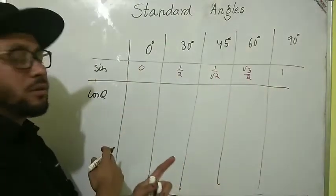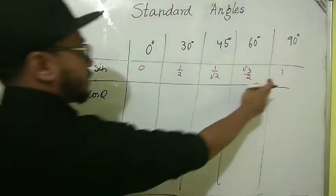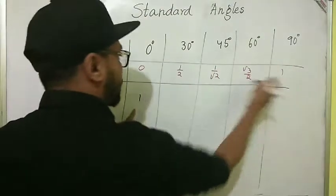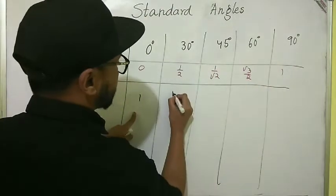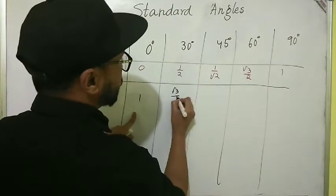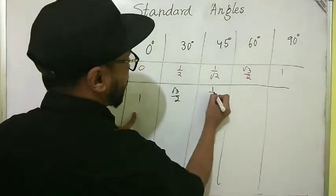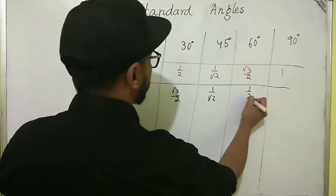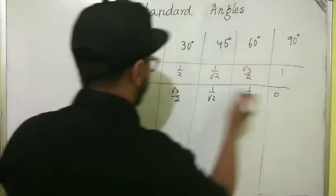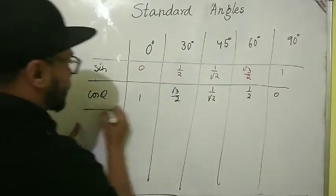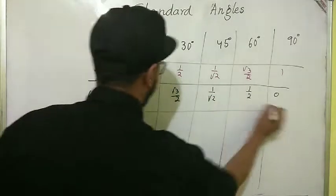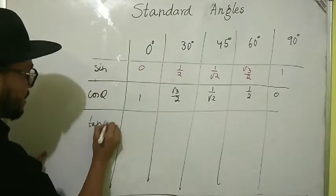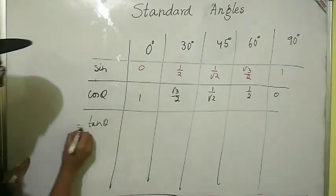For cosine, the values are just the opposite of sine — read them from the opposite side. So: cos 0° = 1, cos 30° = √3/2, cos 45° = 1/√2, cos 60° = 1/2, cos 90° = 0.